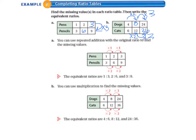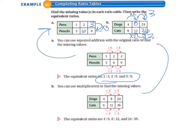Another option is to add columns and go up by 2s to make a longer chart. Going back to letter A, you can also use repeated addition with the original ratio to find the missing values. The equivalent ratios are 1 to 3, 2 to 6, and 3 to 9. For letter B, we used multiplication, and the equivalent ratios are 4 to 6, 8 to 12, and 24 to 36.